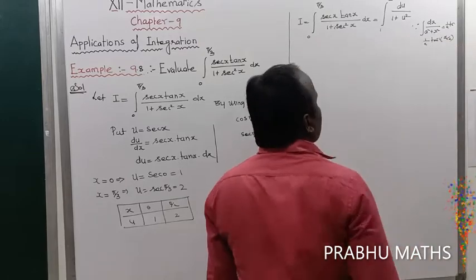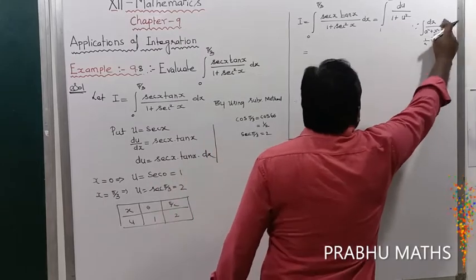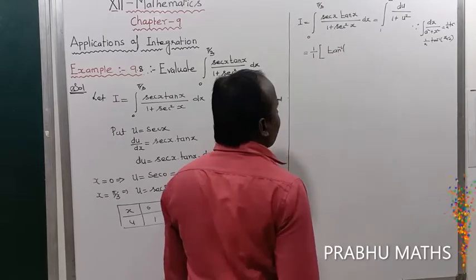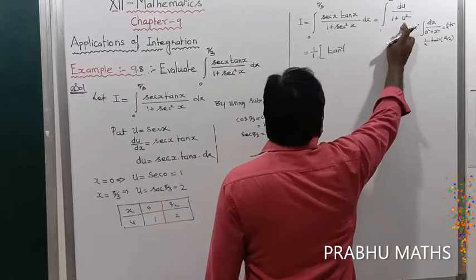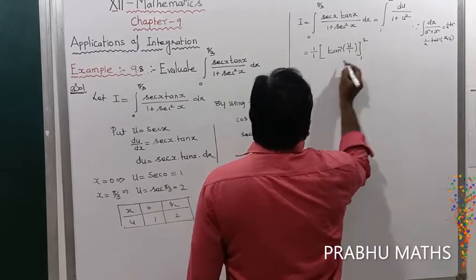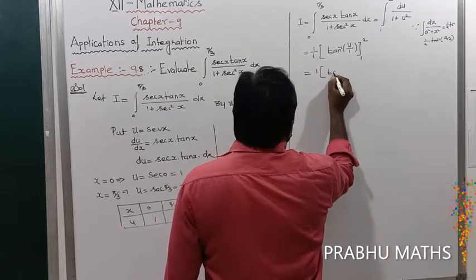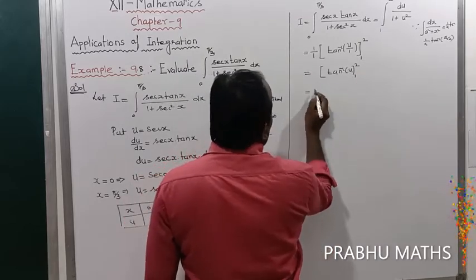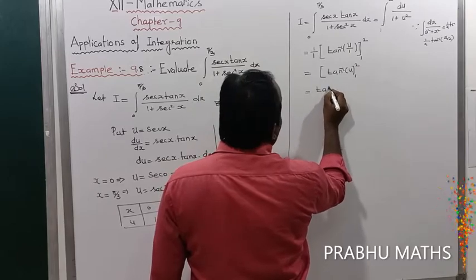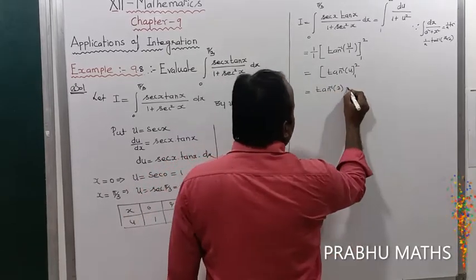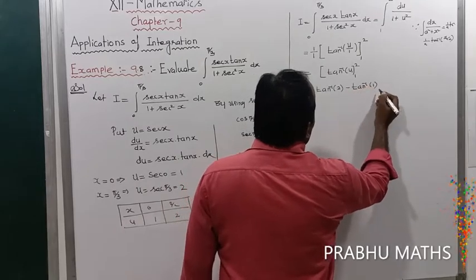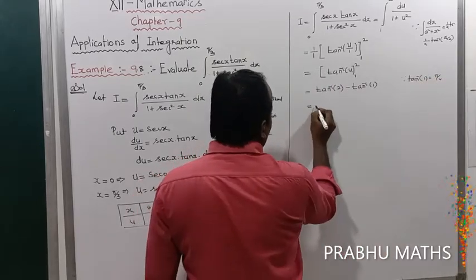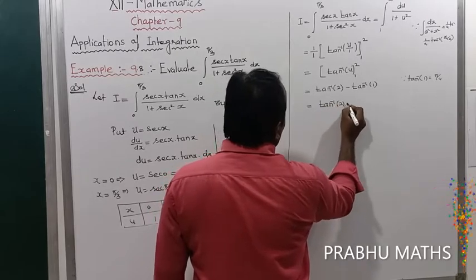Here a equals 1 and x is replaced by u. So the result is (1/1) tan⁻¹(u/1), evaluated from 1 to 2. Applying the upper limit: tan⁻¹(2), minus the lower limit: tan⁻¹(1). Since tan⁻¹(1) equals π/4, the result is tan⁻¹(2) minus π/4.